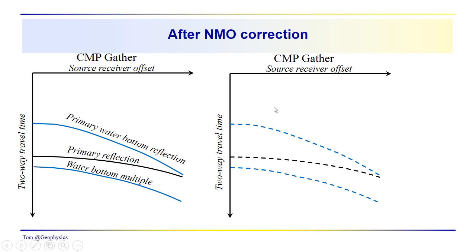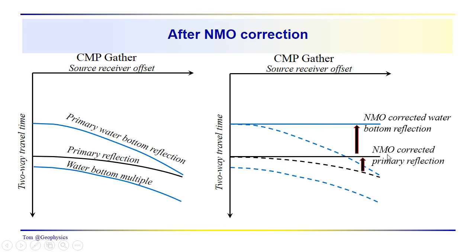I've just kind of dashed them in over here. When we apply the NMO correction, we flatten out the water bottom. We flatten out the primary. But, since we're using velocities in our velocity analysis, we knew better. We knew that the velocity of these deeper reflections was not going to be the same as the water bottom.